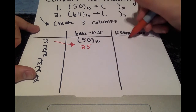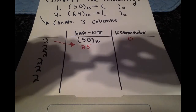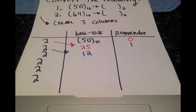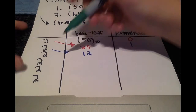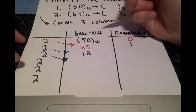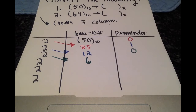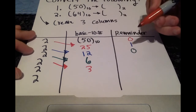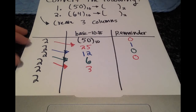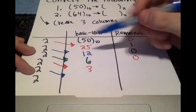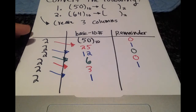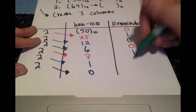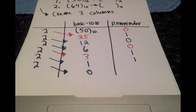How many times does 2 go into 25? 12, with a remainder of 1. We keep this process going: 2 goes into 12 how many times? 6, with a remainder of 0. How many times does 2 go into 6? 3, with a remainder of 0. 2 goes into 3 one time with a remainder of 1.